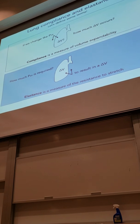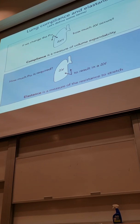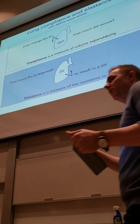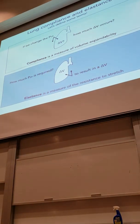So if that rubber band is stretchable, highly stretchable, highly compliant, it's going to have low elastance. And elastance is resistance to stretch. So if we want to measure that rubber band's ability to snap back or to resist our stretching, that's elastance.